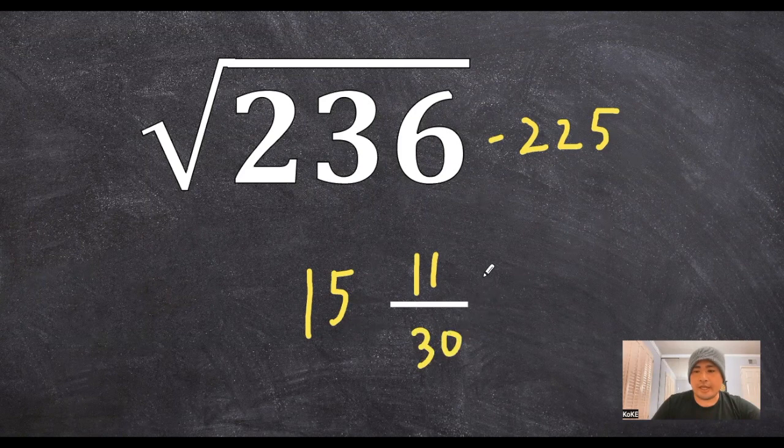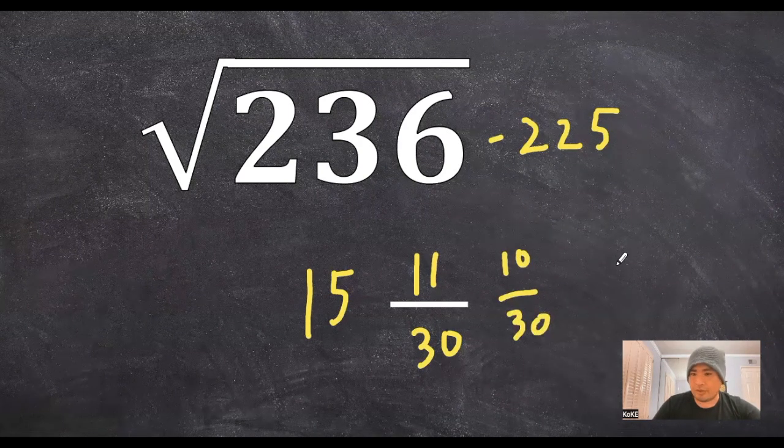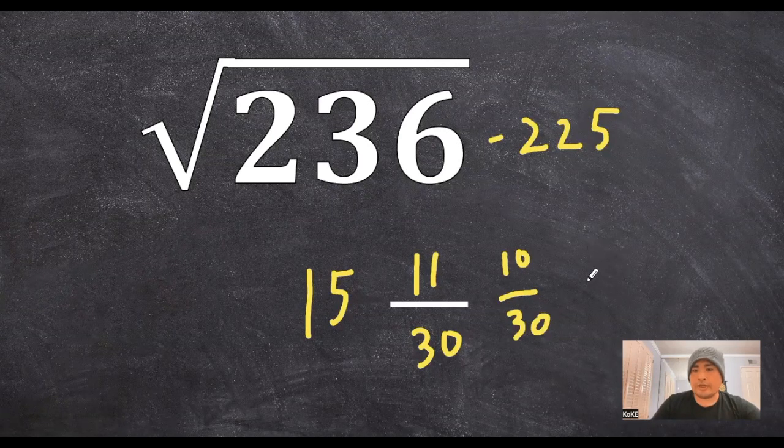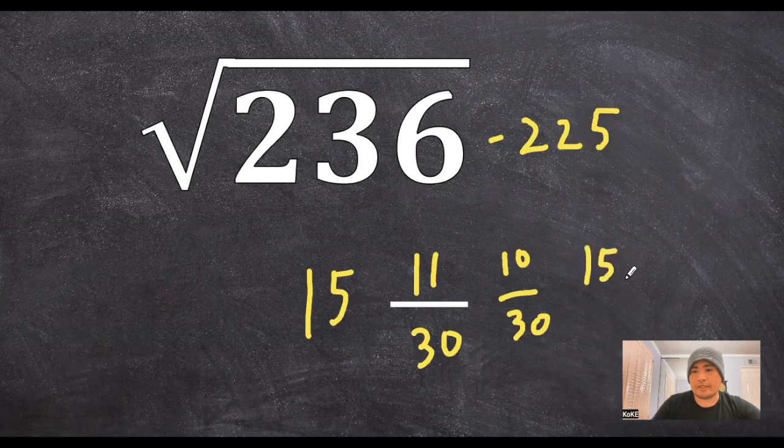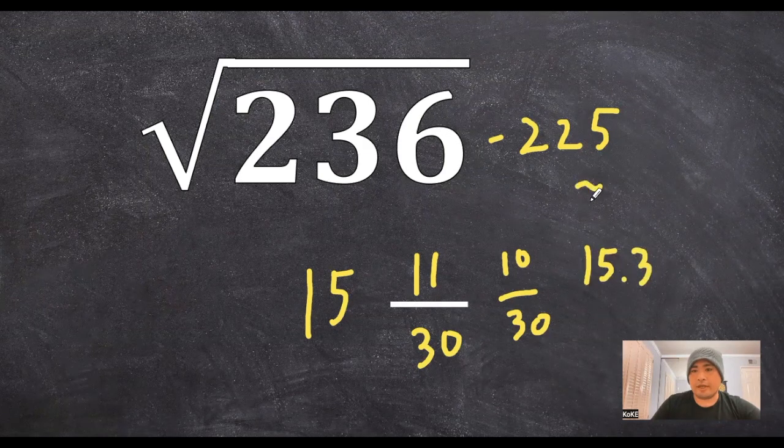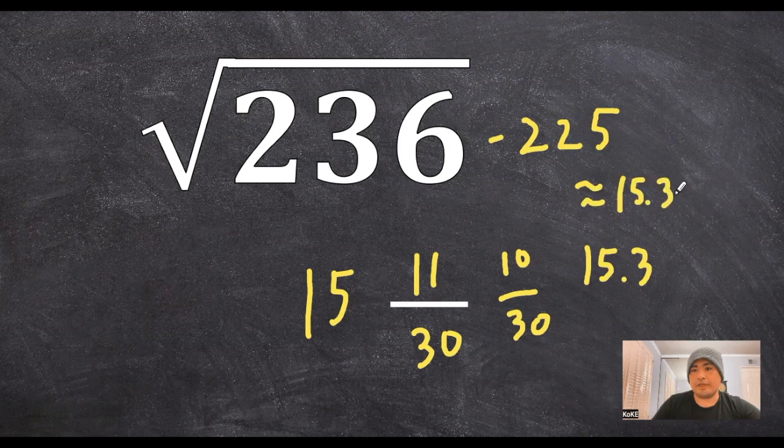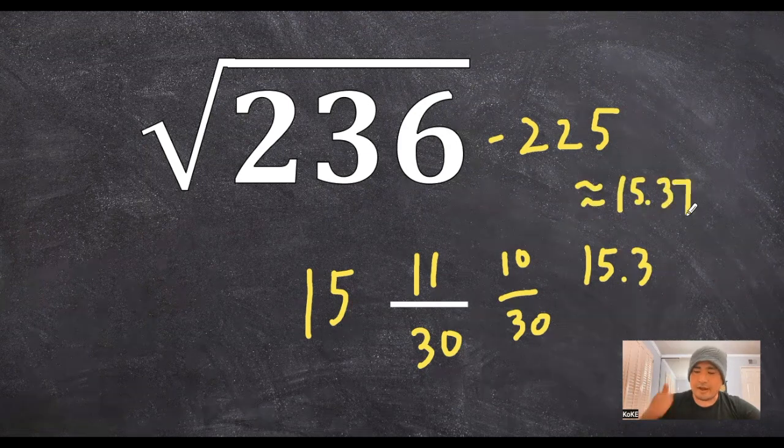Now once again, 11 over 30, don't be intimidated by that. We can think of that as 10 over 30, or one third, which is equal to 0.3333 repeating. So then we can approximate our answer to 15.3. And then our calculator answer gives us 15.37, which again is awfully close.